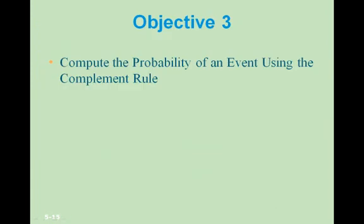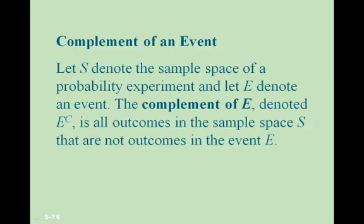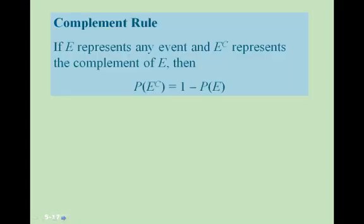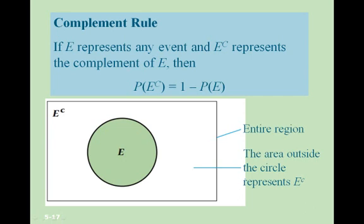Objective 3: compute the probability of an event using the complement rule. Let S denote the sample space and E denote an event. The complement of E, denoted E^C, is all outcomes in the sample space S that are not outcomes in event E. The complement rule states: P(E^C) = 1 − P(E). In a Venn diagram, the circle is event E and everything outside the circle within the rectangle is E^C.